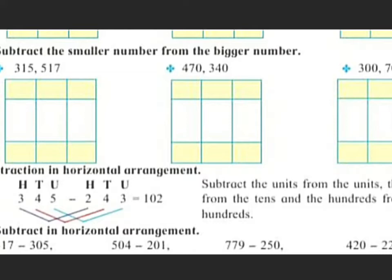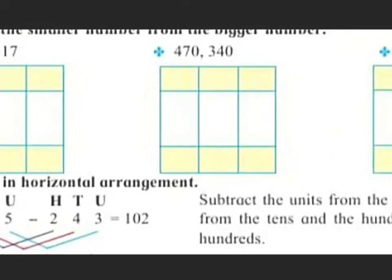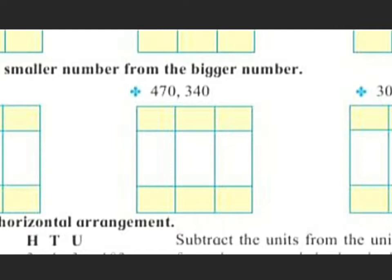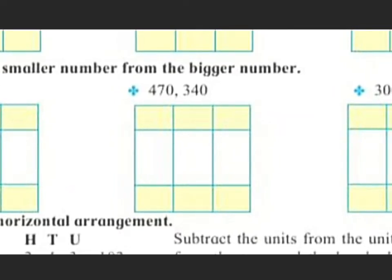So you have to solve as 517 minus 315. The second example is 470 and 340. You have to find out which number is smaller and which is bigger. There is 4 at the hundreds place in the first number and 3 at the hundreds place in the second number.